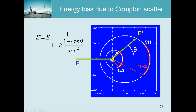If theta equals zero, the photon continues in the same direction and the outgoing energy equals the incoming energy - essentially no interaction occurred. The biggest effect occurs when theta equals 180 degrees, meaning the photon is bounced straight back, because then cosine of theta equals minus one.